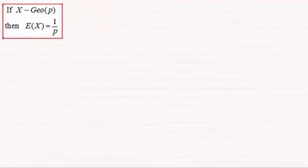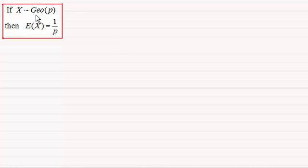Hi there, welcome to another video in my series on the geometric distribution. Now if X is a random variable and it's distributed geometrically with parameter p, then it can be shown that the expected value of X, the mean in other words, E(X), is equal to 1 divided by p.